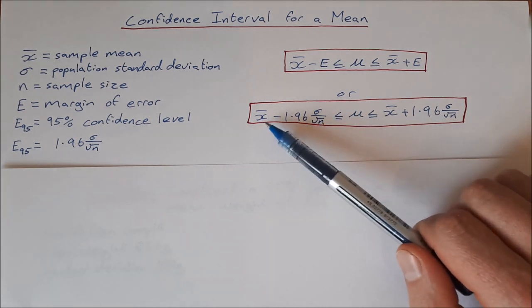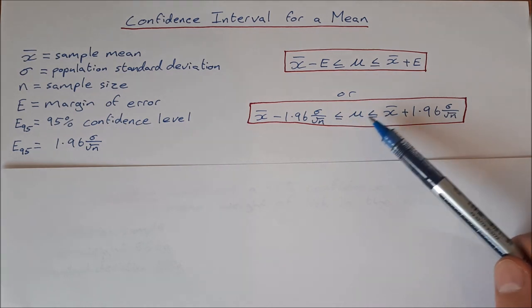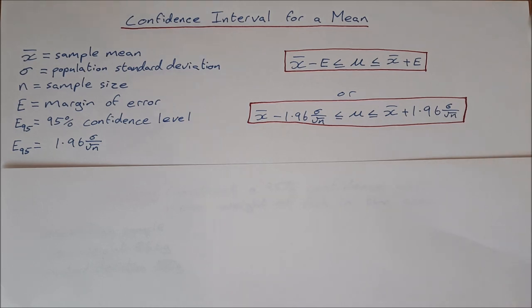It's x̄ minus 1.96 σ over root n, less than or equal to μ, less than or equal to x̄ plus 1.96 σ over root n.